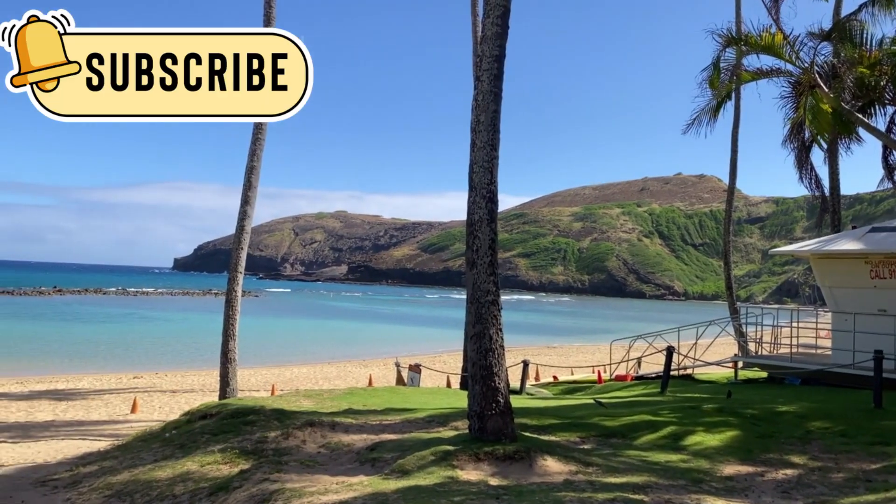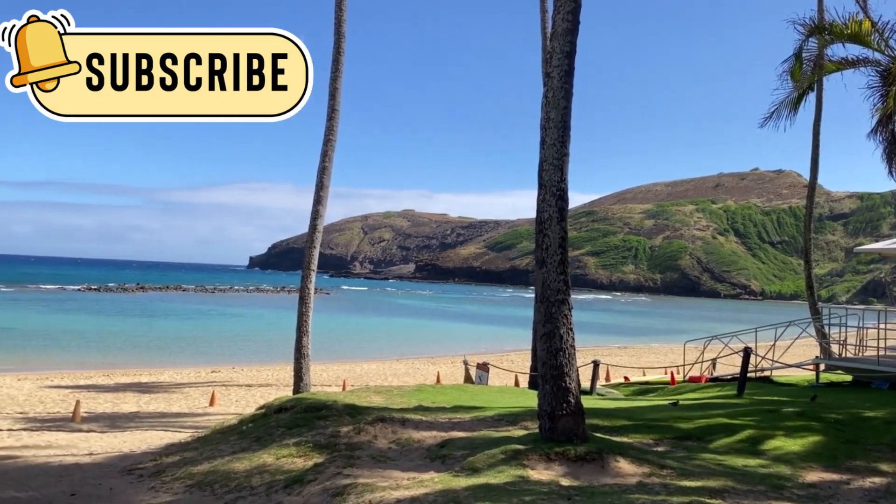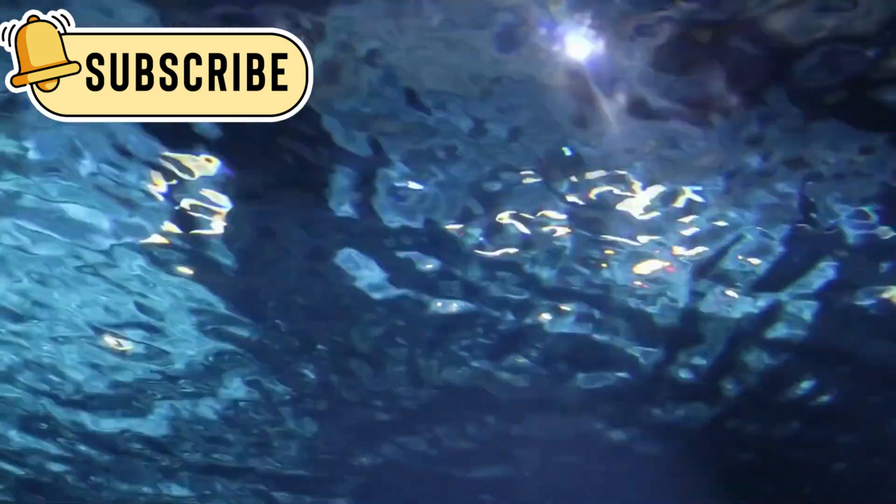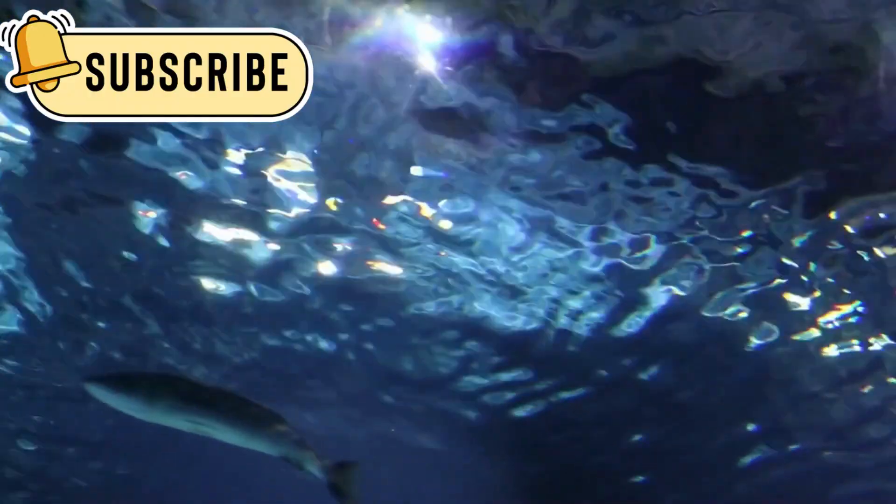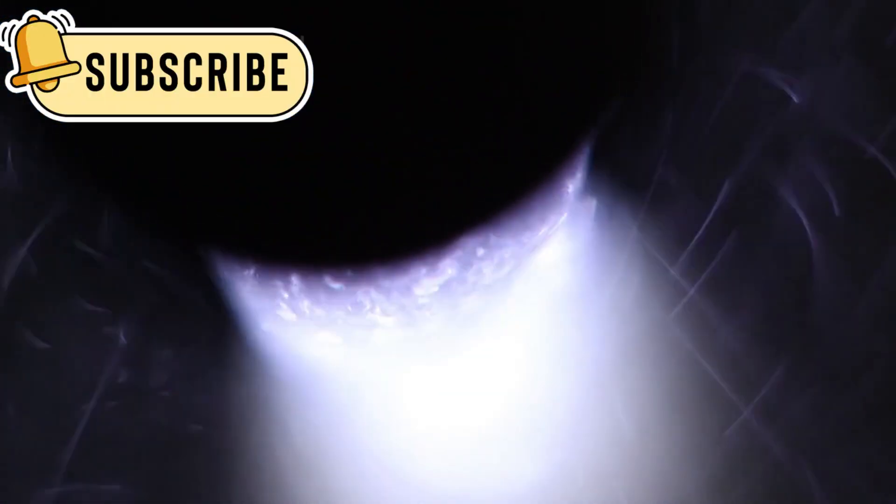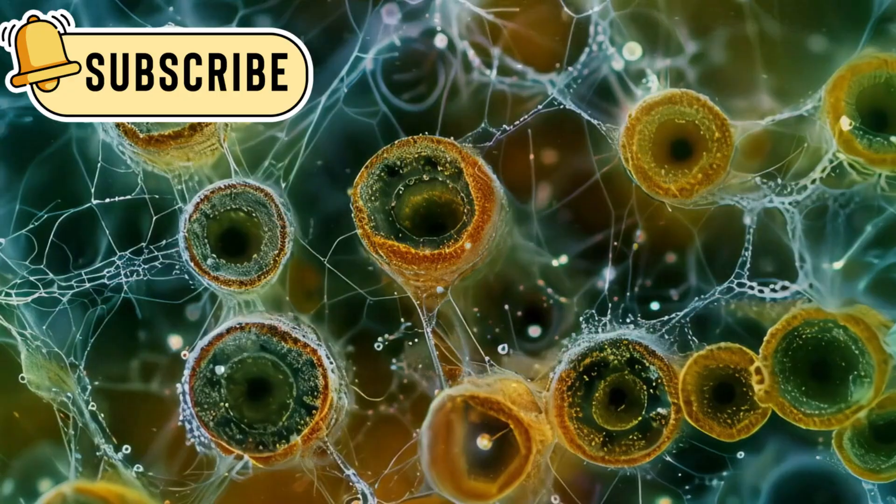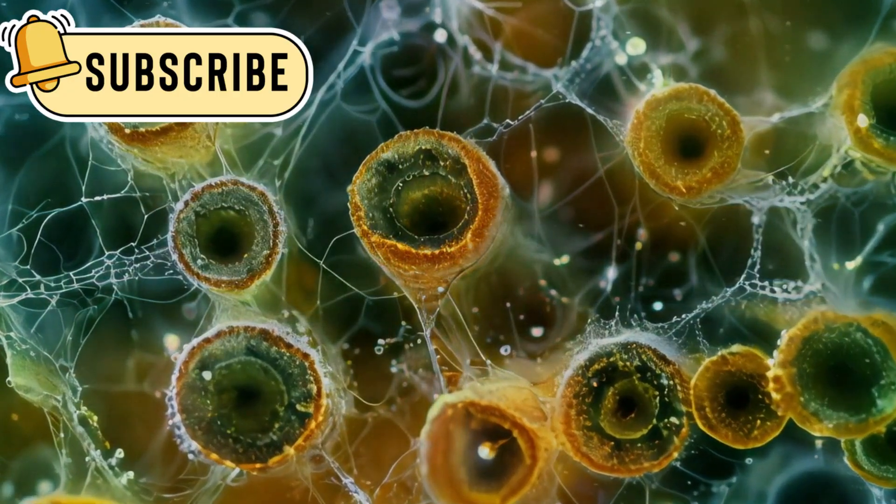If this ocean is real, it changes everything we thought about Pluto. A world so far from the sun might still hold enough warmth to support liquid water. And where there's water, there could be life. Even simple, microscopic life would be a groundbreaking discovery.